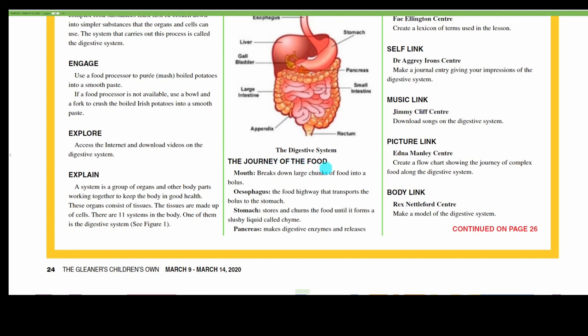The journey of the food. Mouth breaks down large chunks of food into a bolus. And the bolus simply is a round ball, and your tongue is very important in rolling the food into that round ball. Esophagus: the food highway that transports the bolus to the stomach.